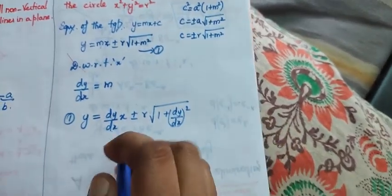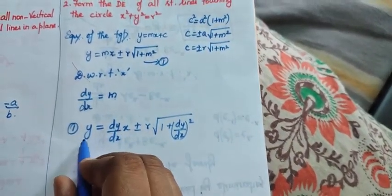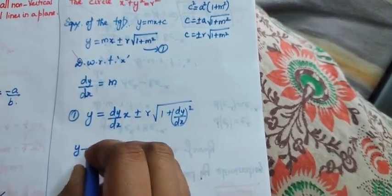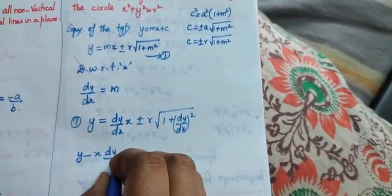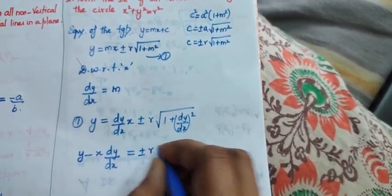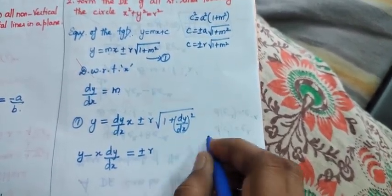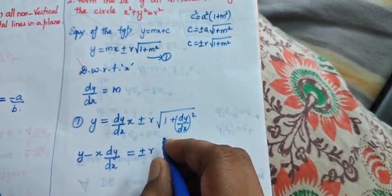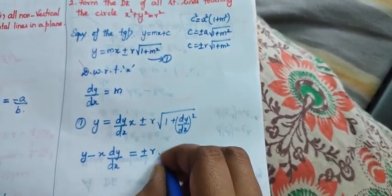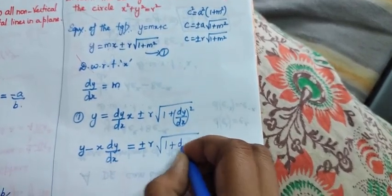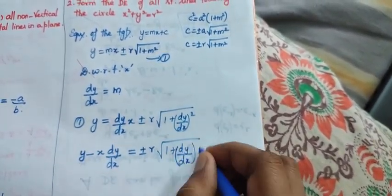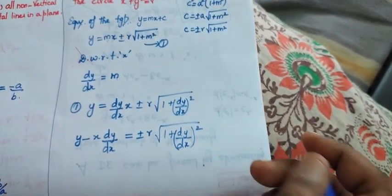Am I right? Now, what is the answer for this? Shall I bring it to this side? So, my answer is y minus x into dy by dx equals plus or minus r into root of 1 plus dy by dx the whole square. That is our answer.